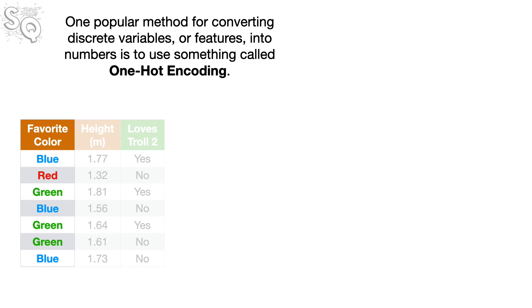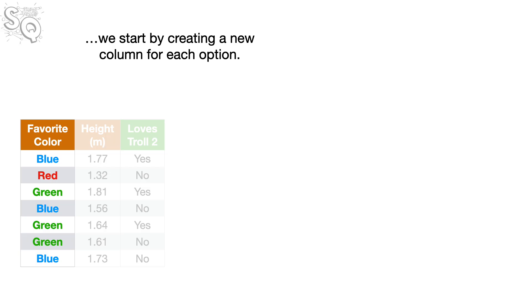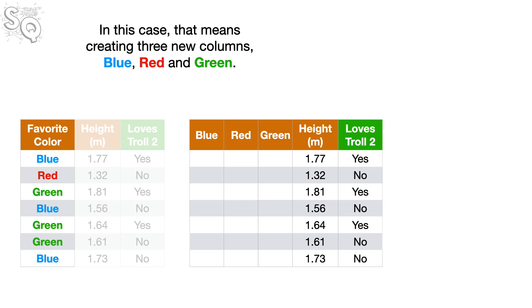One popular method for converting discrete variables or features into numbers is to use something called one-hot encoding. When we have three or more options for a discrete variable — and in the case of Favorite Color, we have three options — we start by creating a new column for each option. In this case, that means creating three new columns: blue, red, and green.